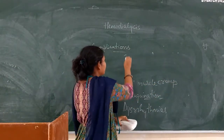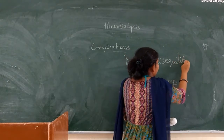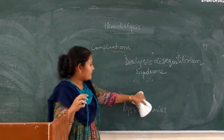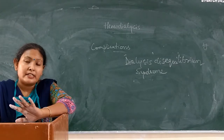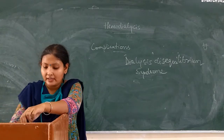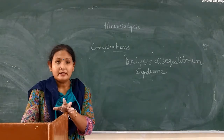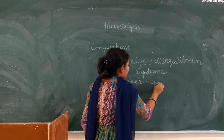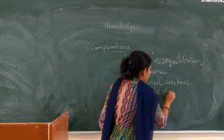Then dialysis disequilibrium syndrome. This occurs because of cerebral fluid shifts. The patient will experience confusion, headache, nausea, vomiting, restlessness, decreased level of consciousness, and seizures — all due to rapid cerebral fluid shifts.